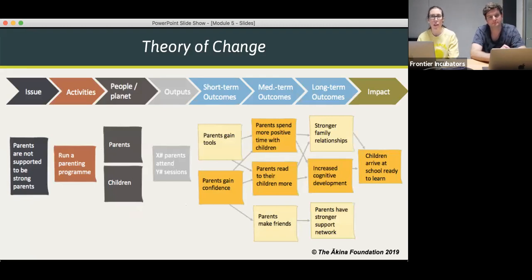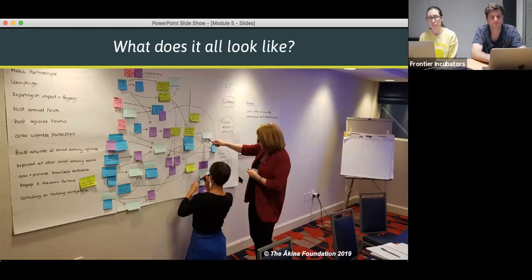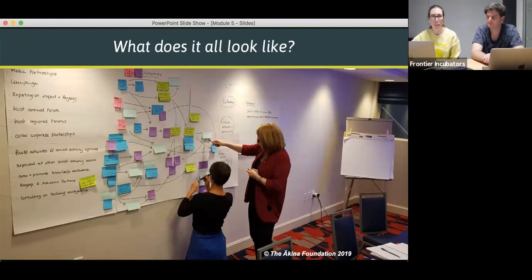This was the simple theory of change we used as an example: parents participating in a parenting program so they could grow their confidence, read to their children more, increase the cognitive development of the children, which would lead to children arriving at school ready to learn. Some of you had a go at a theory of change workshop with a venture and tried out that facilitation process. It usually goes through a messy phase where the social enterprises are throwing out everything they're doing, and then you refine it and bring it back together, maybe with some arrows.